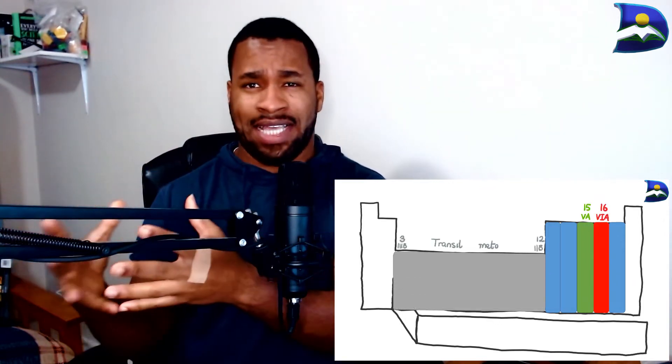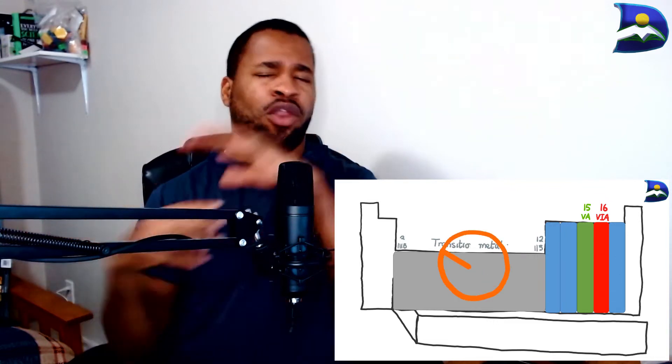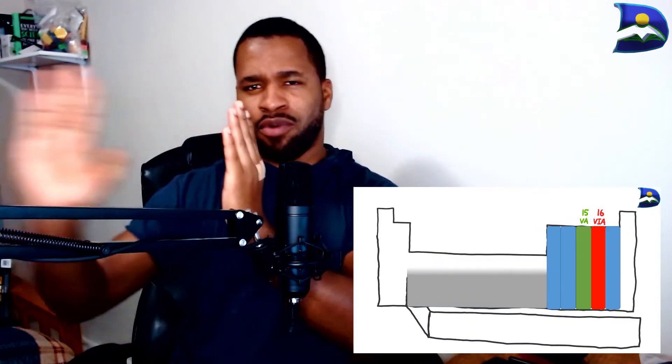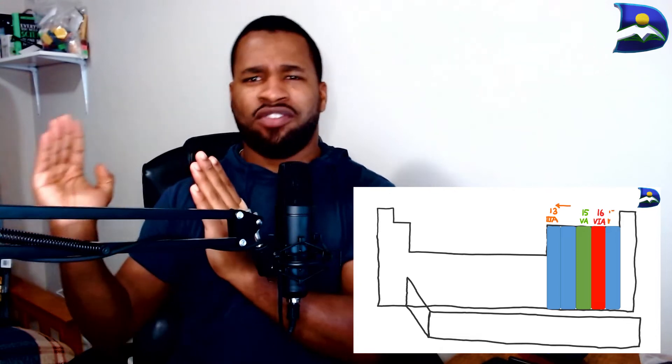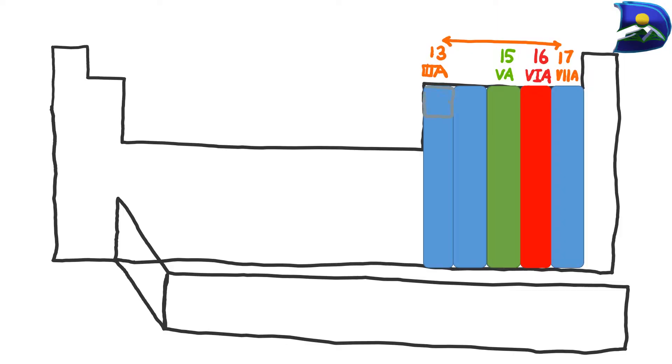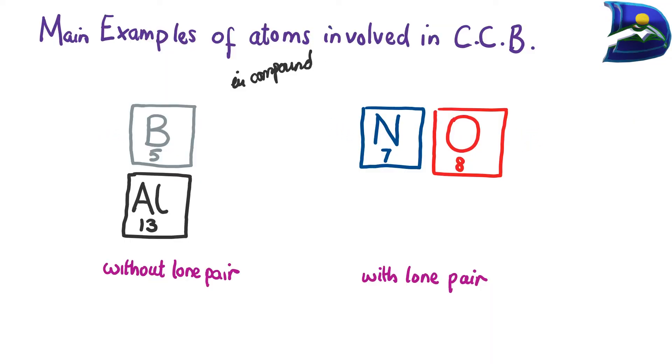Sometimes transition metals are involved in coordinate systems, but we won't dive into that as it's quite complicated. Looking at other variations, from group 13 all the way to group 17, we see that boron has a notable influential role in creating that particular form of bond — the coordinate covalent bond.